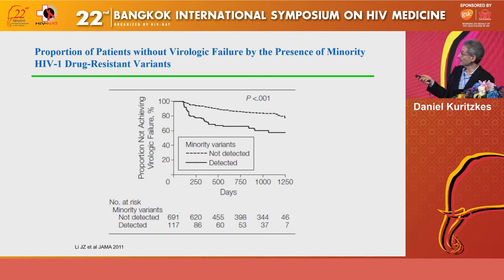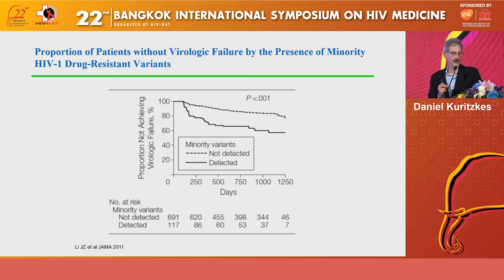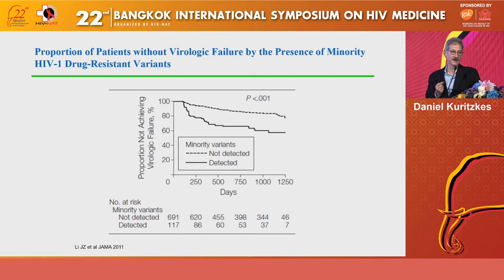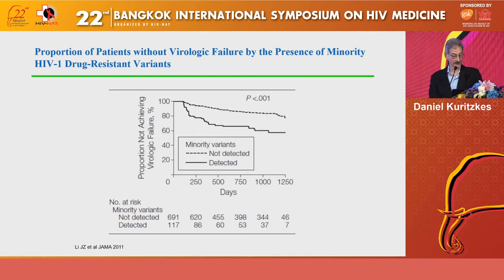Again, more than half of the participants who did have minority variants managed to be successfully suppressed. In this situation, very sensitive techniques for detecting minority variants may have high sensitivity but low specificity, and therefore not terribly good predictive value for who might fail on a particular regimen.